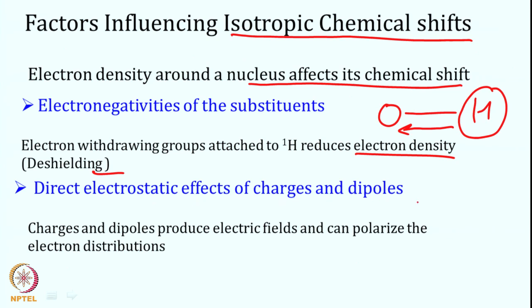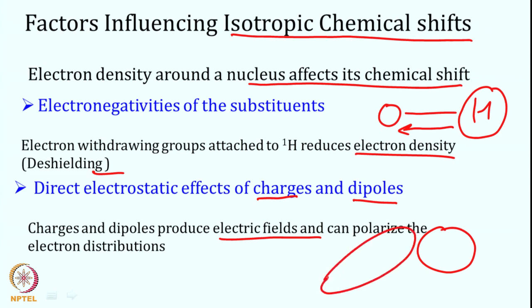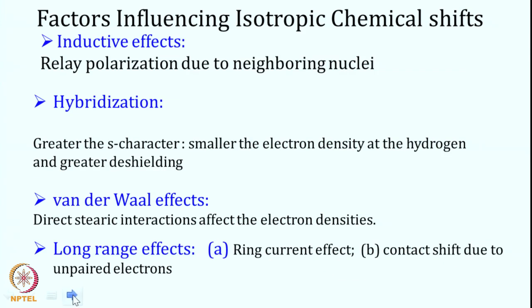Another factor is the direct electrostatic effect of charges and dipoles. If there is some charge or dipole in the sample, it can produce an electric field that polarizes the electron distribution around the compound. If the electron density was spherical and you add a dipole, it distorts it, changing the resultant chemical shift around a particular nucleus.